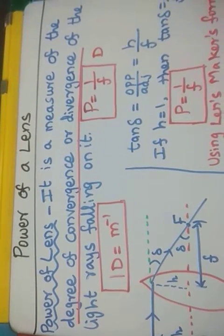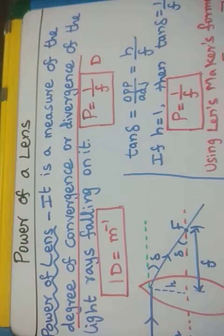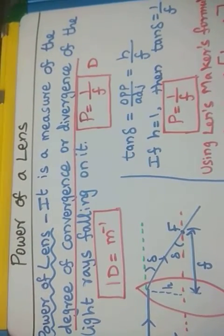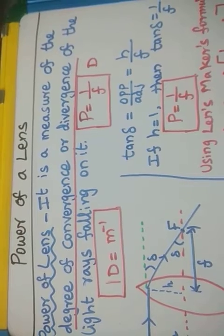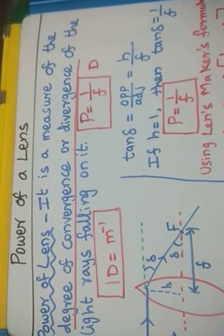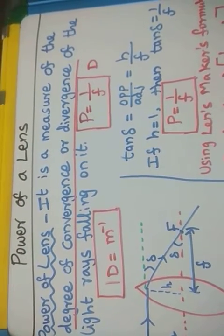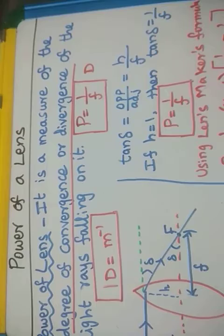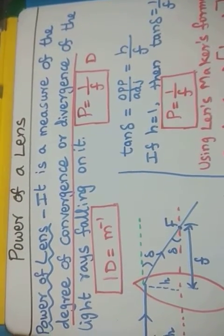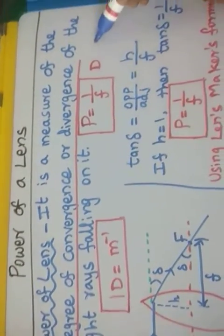That means converging power or diverging power. When the light rays fall on the convex lens, that is a converging lens, the light will be converged and meet at the focus. The measure of degree of convergence in the convex lens or measure of degree of divergence in the concave lens is called the power of a lens. The SI unit of power of a lens is diopter.